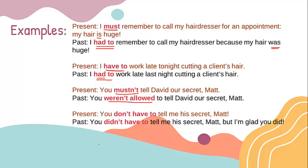Example number four. Present: 'You don't have to tell me his secret, Matt.' Instead of using 'don't have to,' we use 'didn't have to,' because the auxiliary verb we use in the past is 'did.' So: 'You didn't have to tell me his secret, Matt. But I'm glad you did.'